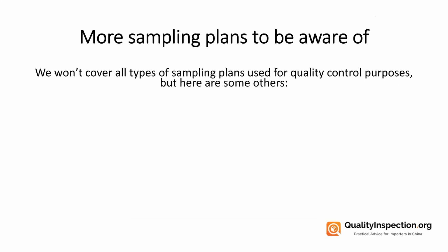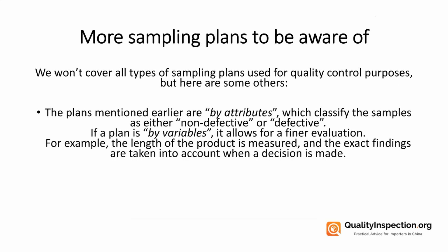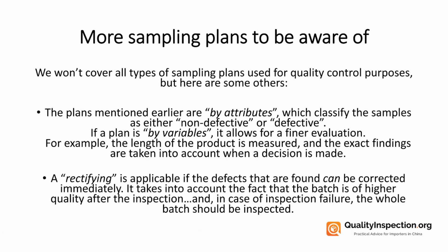There are even more sampling plans to be aware of. The plans mentioned so far are by attributes, which classify samples as either non-defective or defective. However, if a plan is by variables, it allows for a finer evaluation — for example, the length of the product is measured and exact findings are taken into account when a decision is made. A rectifying plan is applicable if the defects found can be corrected immediately; it takes into account that the batch is of higher quality after inspection, and in the case of inspection failure, the whole batch should be inspected.